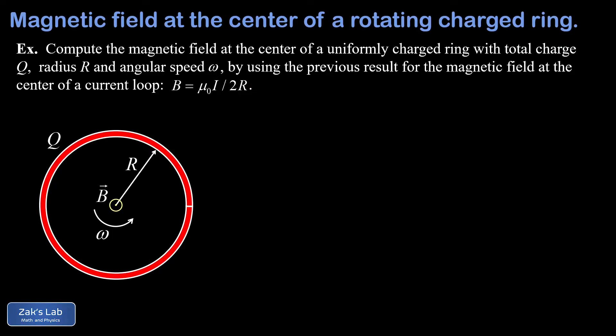The whole idea of the problem is that for some fixed observation point along the edge of the ring, a constant amount of charge is going to pass by that observation point every second. That charge per second is exactly the same thing as a current passing by the observation point. So if we can calculate the current resulting from the charged rotating ring, we just plug into our previous result from the Biot-Savart law, and we've got the magnetic field.